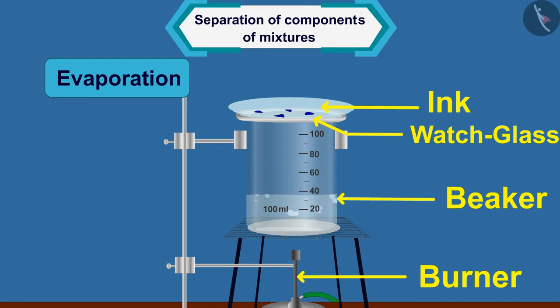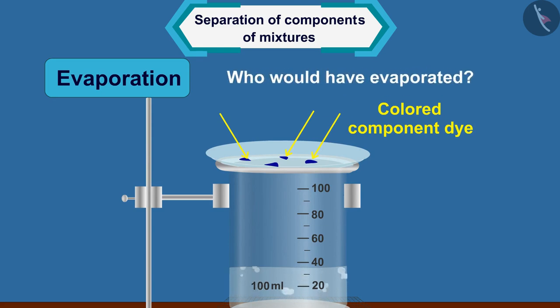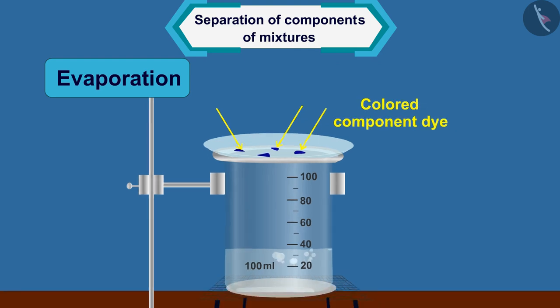Is there any residue left on the watch glass? Yes. We can see that the blue component, dye, appears as a residue on the watch glass. So, according to you, which substance has evaporated from the watch glass? Yes. Absolutely correct. Water.